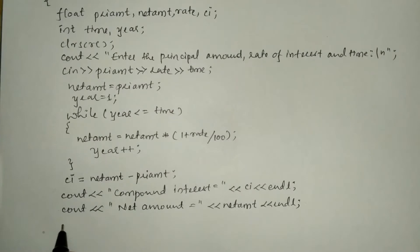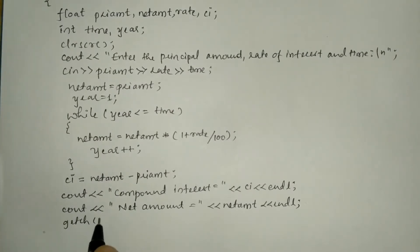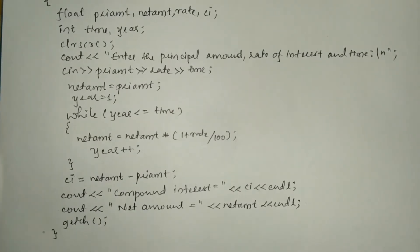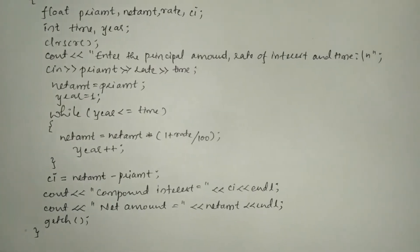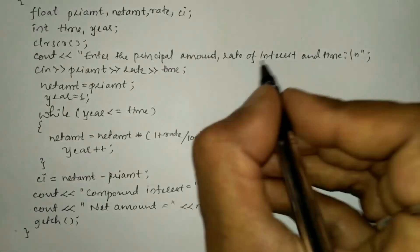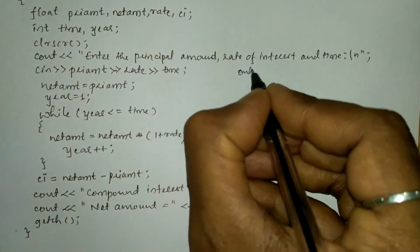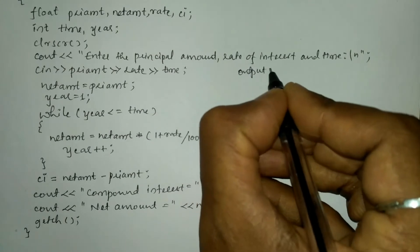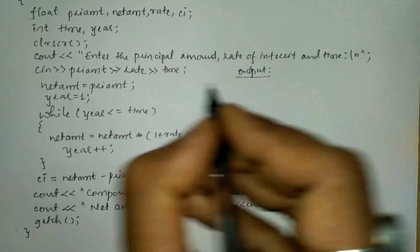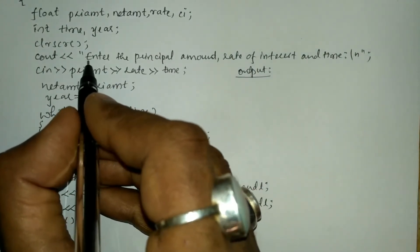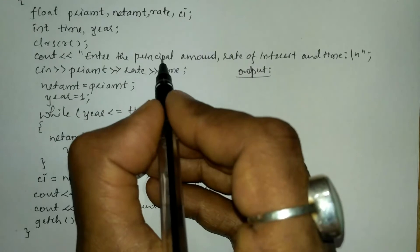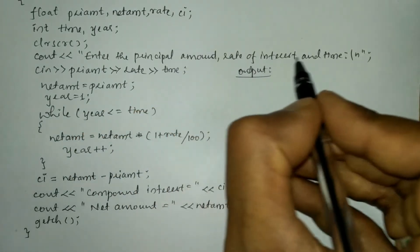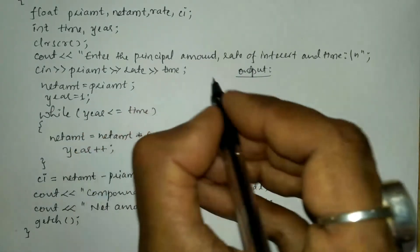Now I am going to write the getch() function and then the curly closing brace to end main. Let us take an example. When we compile and run this program, it will ask the user to enter the principal amount, rate of interest, and time.